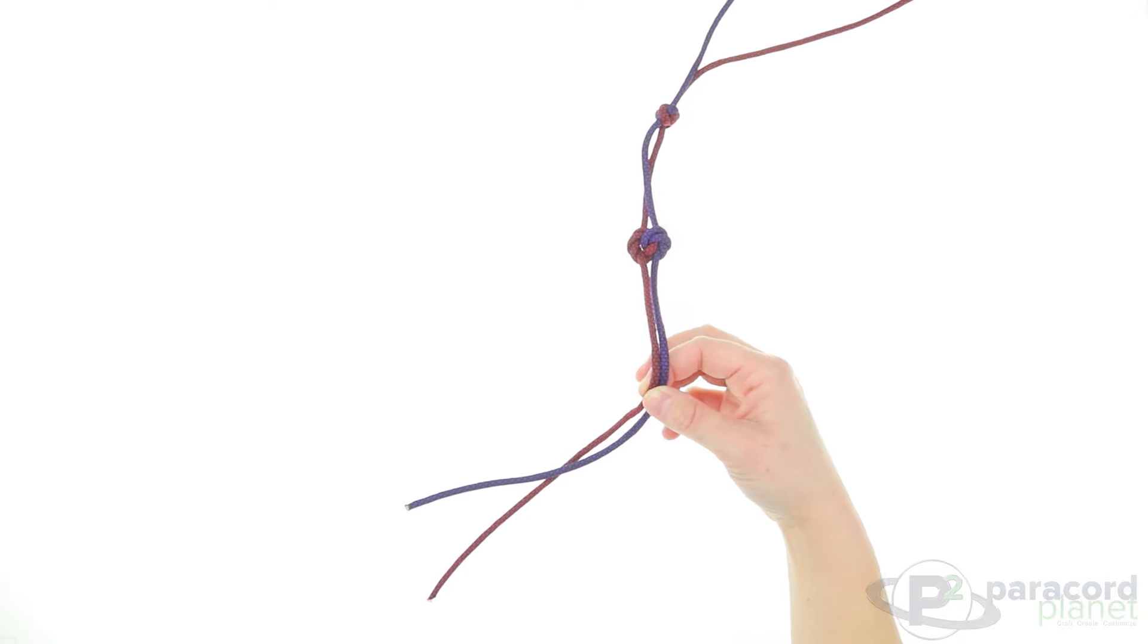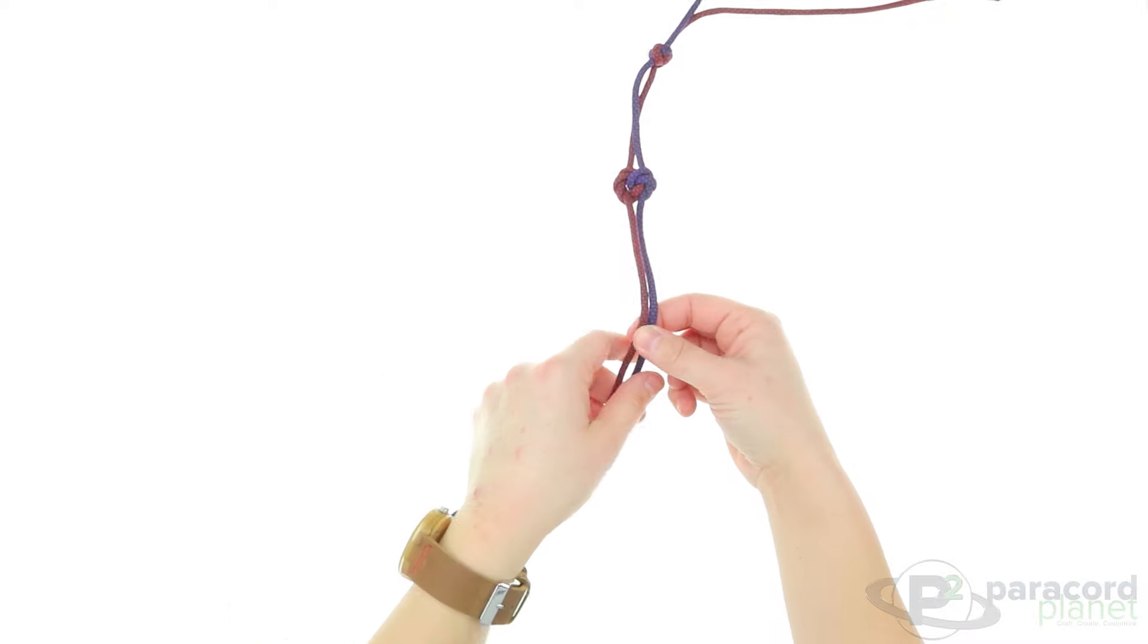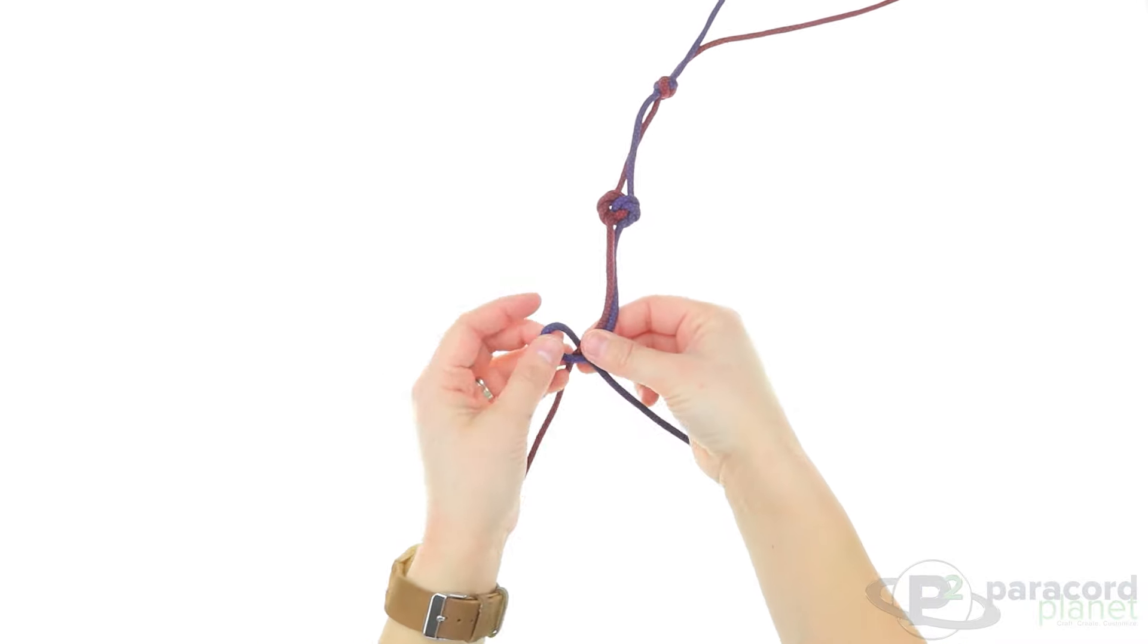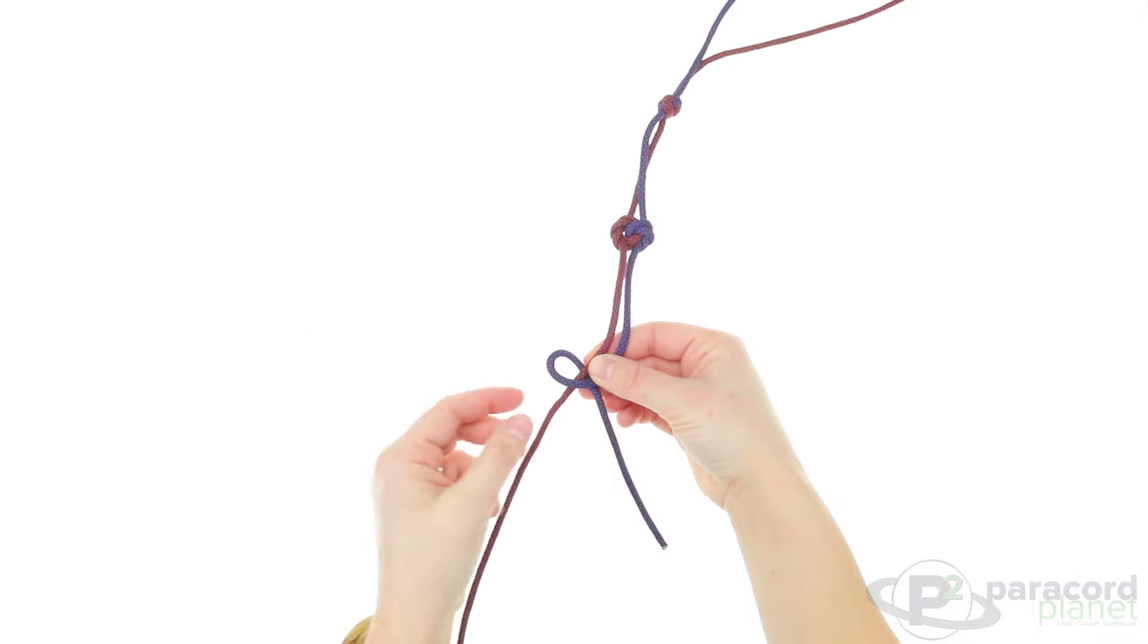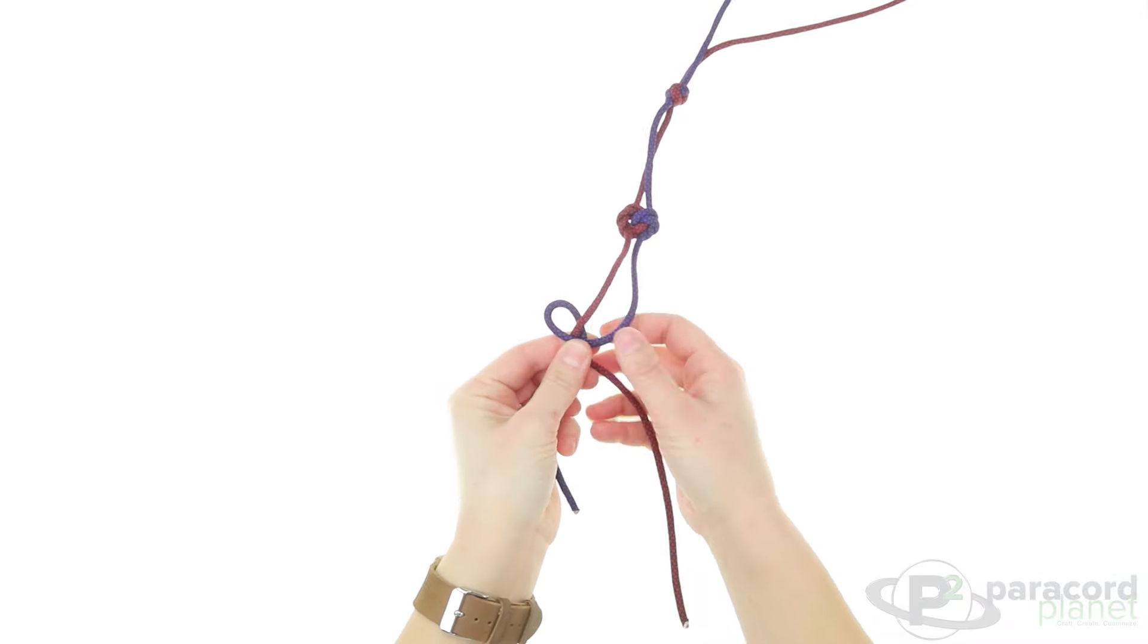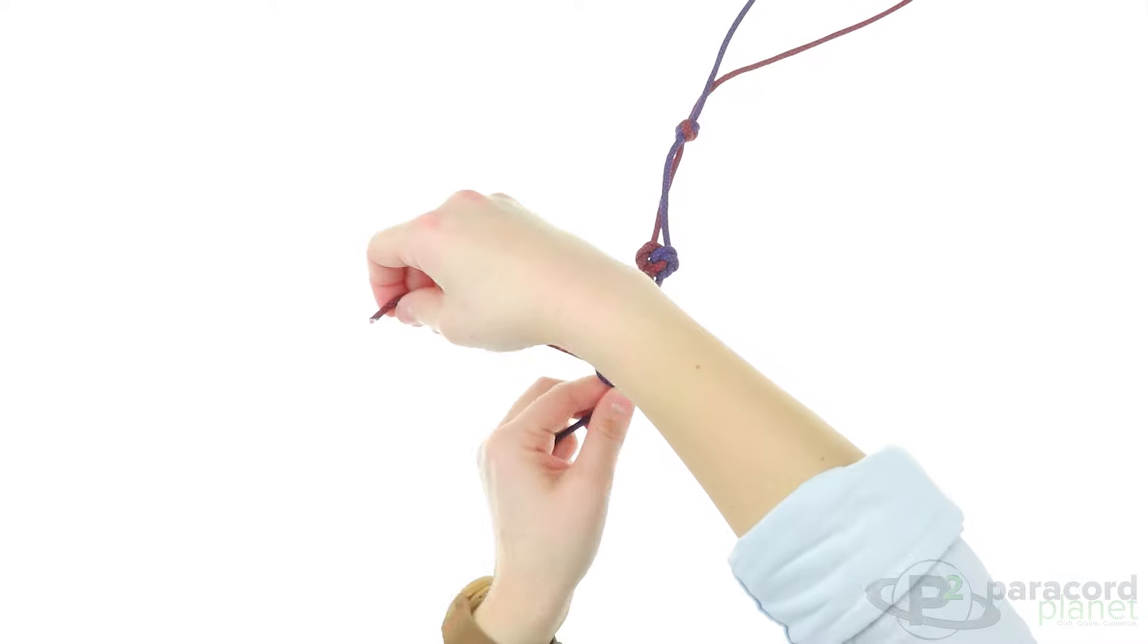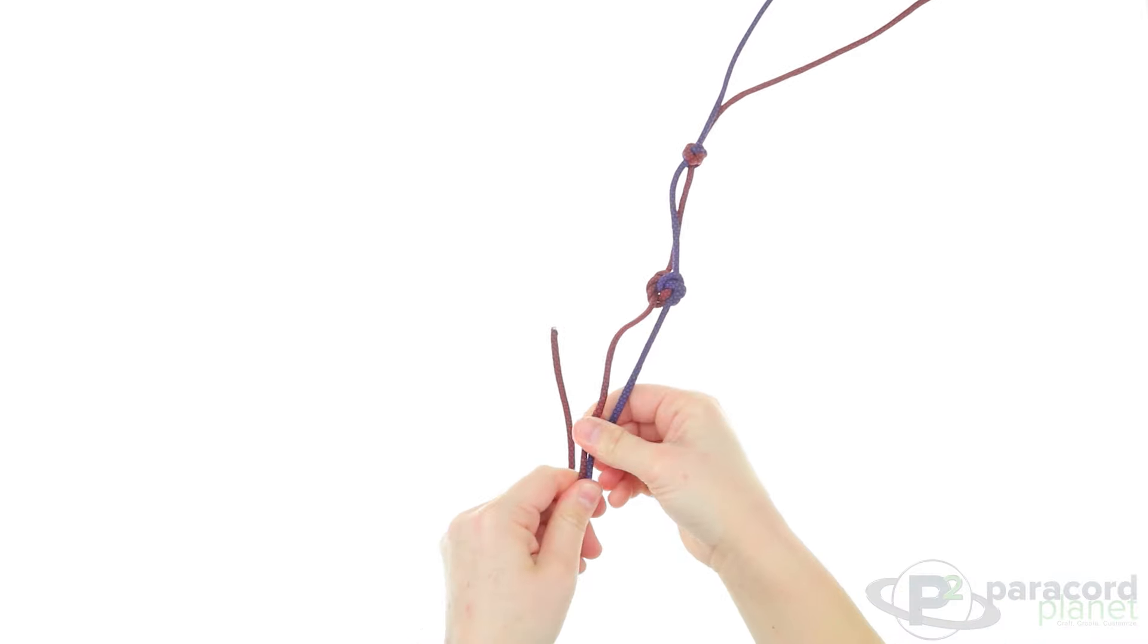We do have a video on a single color and a two-color snake knot if you want a closer or more detailed look into doing it. So you'll just want to make a loop on this side, on the left side here. Take the cord on the left then, go behind and then down through the loop. That's all there is to it. You can pull that tight.